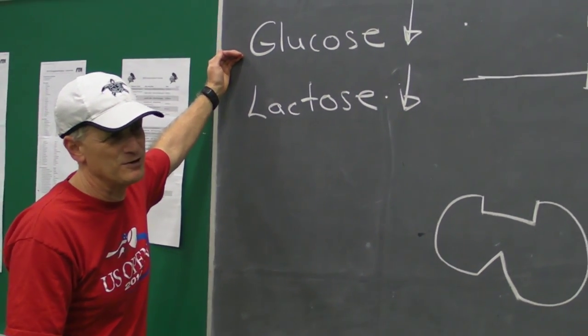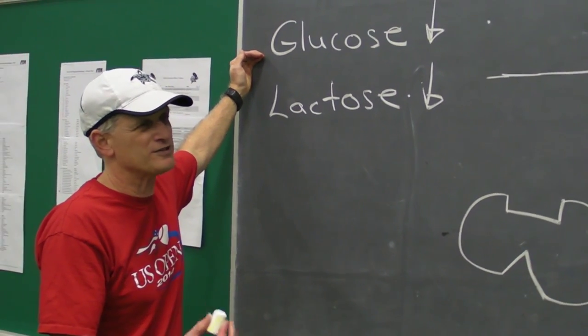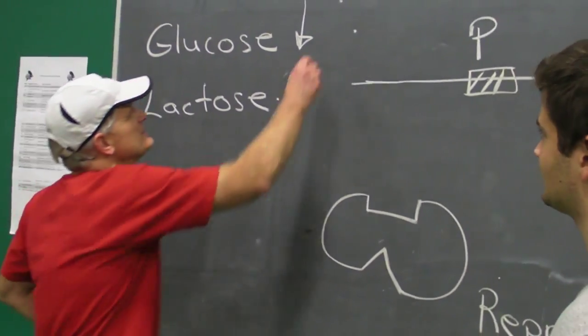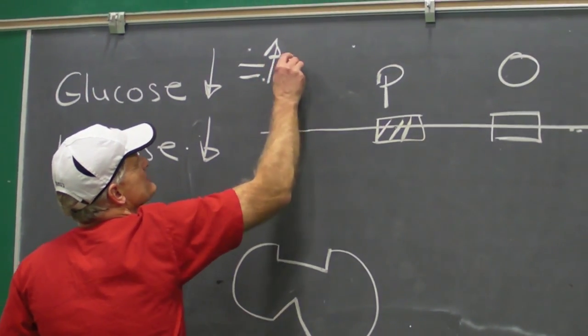Let's deal with the glucose levels low. Glucose levels low mean what for cyclic AMP? It's gotta be high, right? Right. So, that means high levels of cyclic AMP.